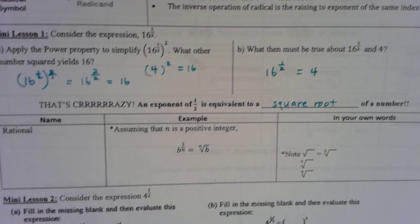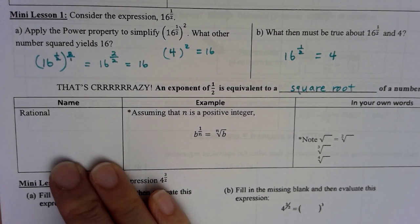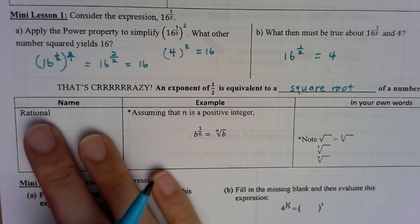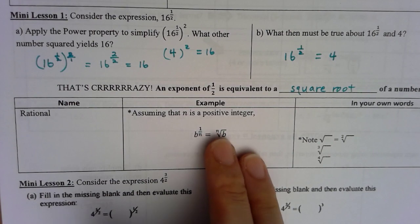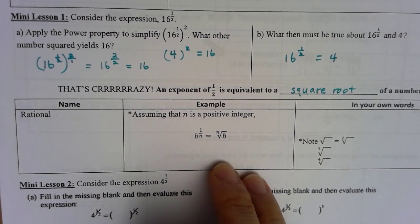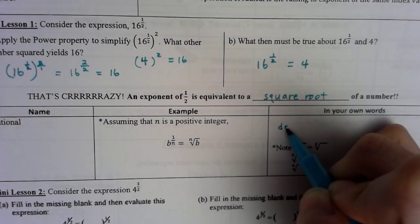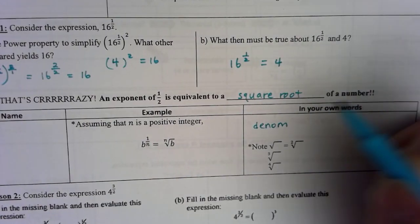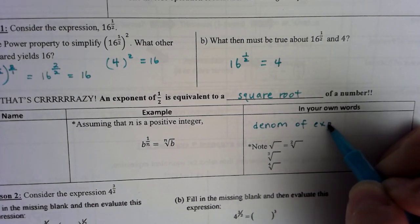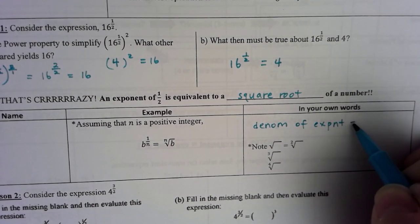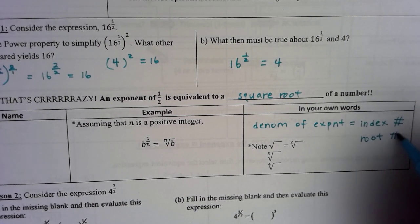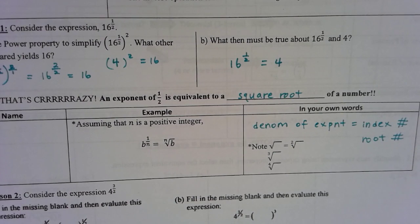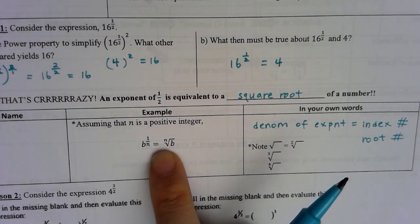So now we've covered and discovered a new exponent property. Whenever we have a fractional exponent, the denominator is the same thing as taking the nth root. So whenever we deal with fractional exponents, we need to deal with radicals. Let's take a look at some vocabulary involving radical expressions.